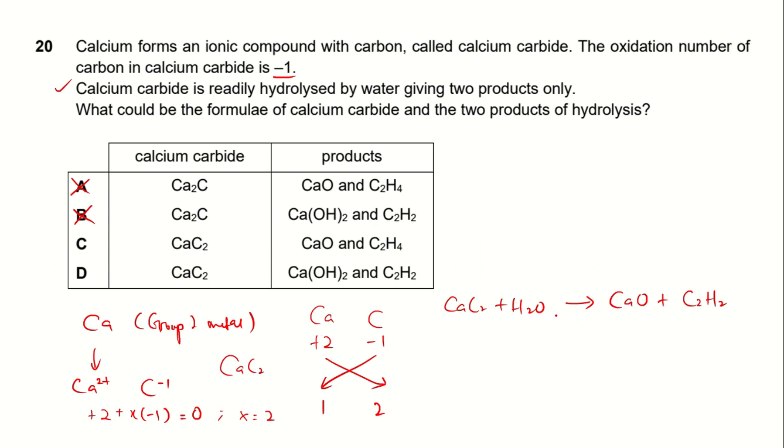Right, if we use one water molecule, we should use calcium oxide and ethyne. But if you look at the answer in C, if there is calcium oxide, the other product will be C2H8. But we will not be able to do C2H8 because there is no enough hydrogen from one water molecule.